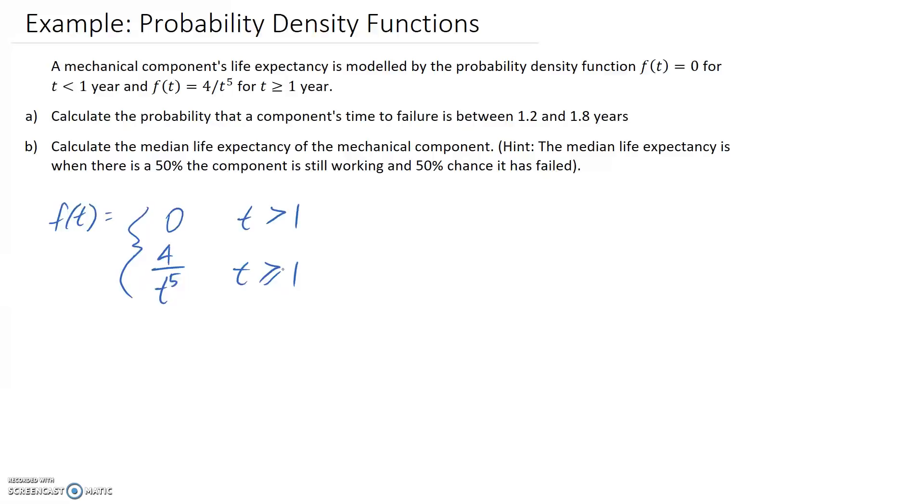If we sketch this, t on the x-axis and f of t, our probability on the y-axis. So up until t is one, we're just going to end up with a value of zero, so I'll mark that in. So that's where one occurs, and then we have to plot this equation for t is greater than one, and I think it looks something like this, roughly.